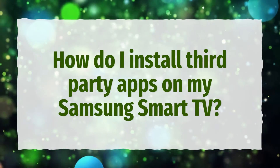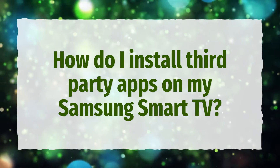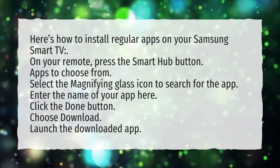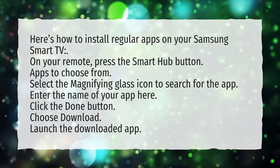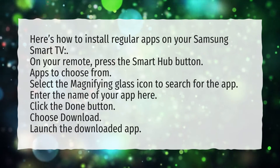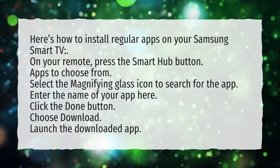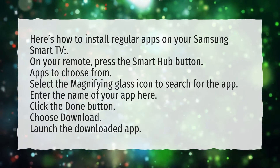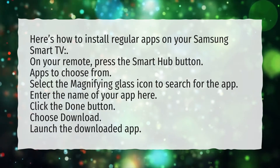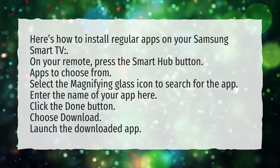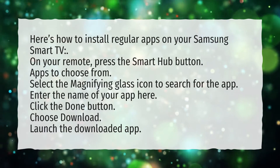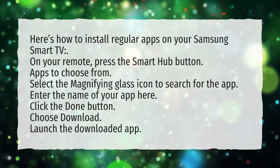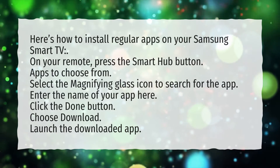How do I install third-party apps on my Samsung Smart TV? Here's how to install regular apps on your Samsung Smart TV. On your remote, press the Smart Hub button. Select the magnifying glass icon to search for the app. Enter the name of your app here. Click the Done button. Choose Download. Launch the downloaded app.